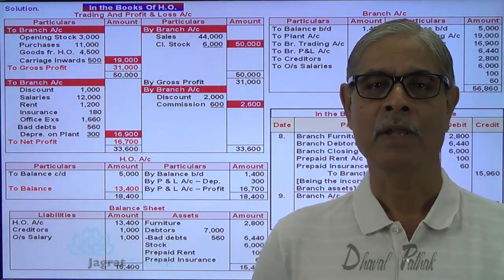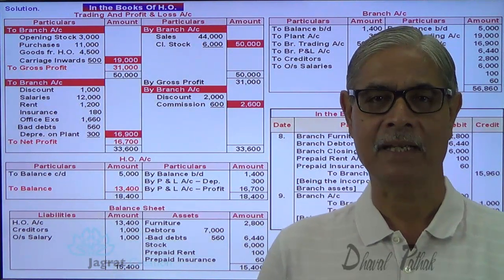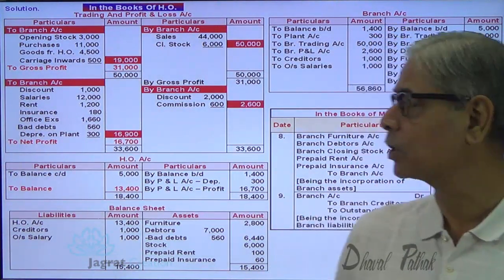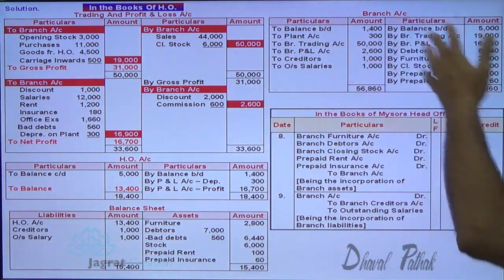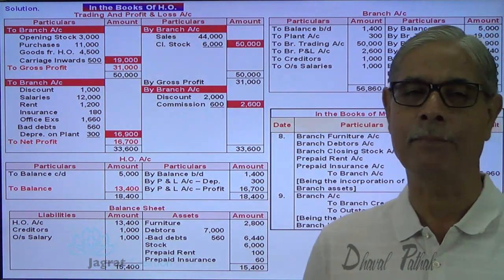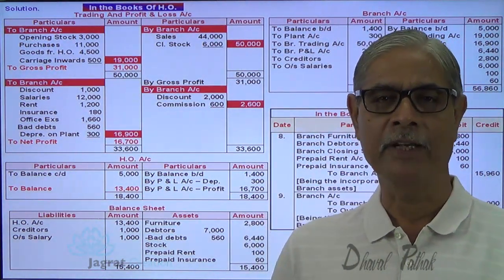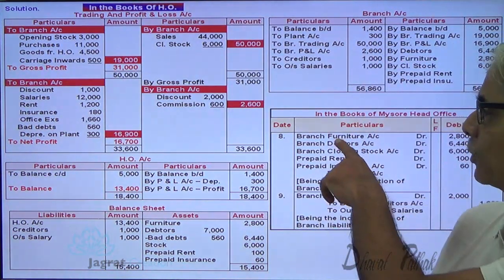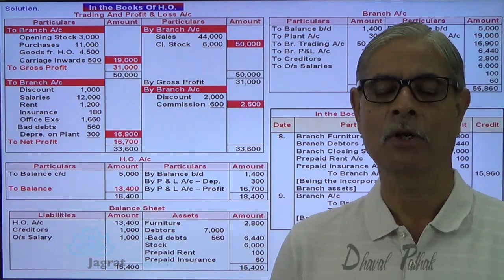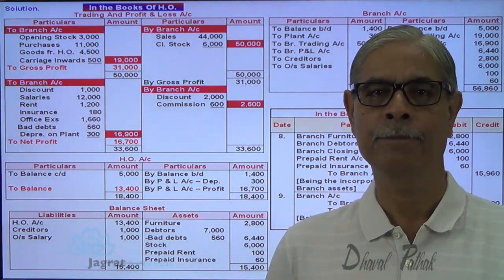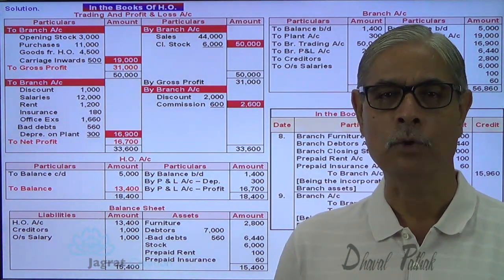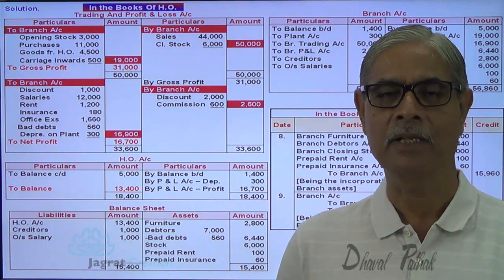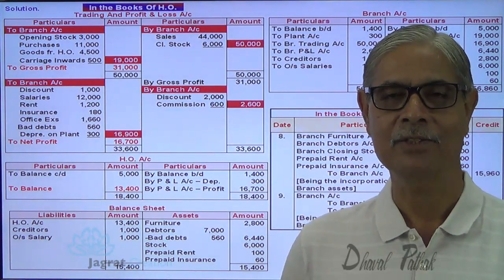This is how absorption entries are recorded in the case of an independent branch. In total, 9 entries have been recorded: 3 for the trading account, 4 for the profit and loss account, and 2 for the absorption of assets and liabilities. I have tried to explain all these things and I feel that you have followed. Thanks to all of you.